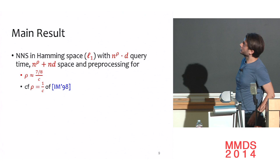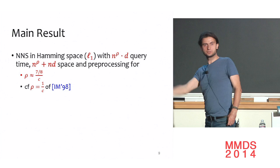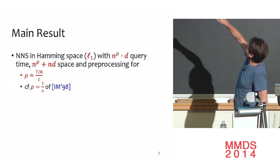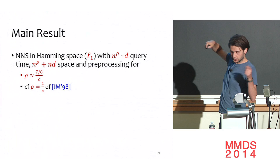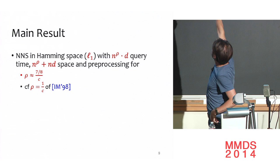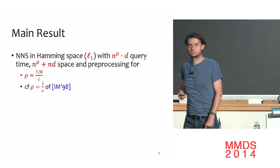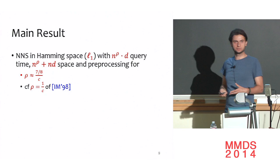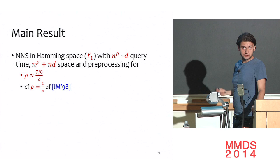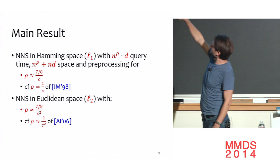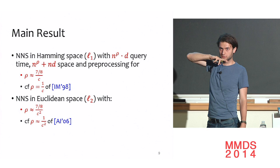Our main result is that we can actually improve nearest neighbor search — we can go beyond the lower bounds for locality-sensitive hashing. For Hamming space, we obtain essentially the same space-query-time trade-off but with query time n^ρ where ρ = 7/(8C), compared to the exponent 1/C of Indyk-Motwani. We're saying that LSH is not necessarily the only way to do nearest neighbor search, and we can go below these lower bounds. The same holds for Euclidean space with 1/C² replaced by 7/(8C²).